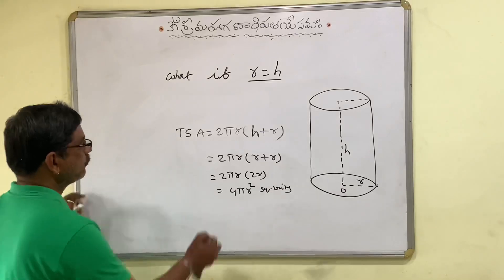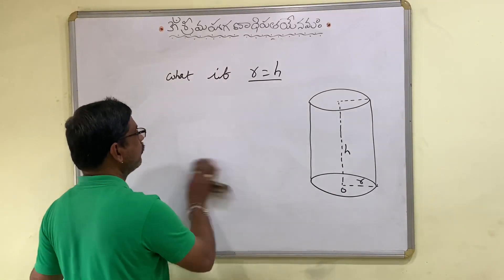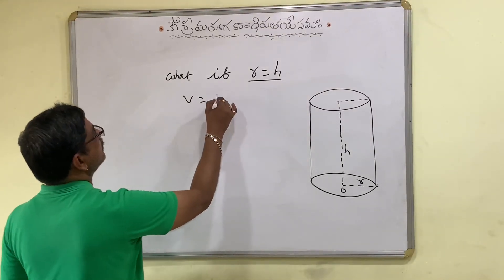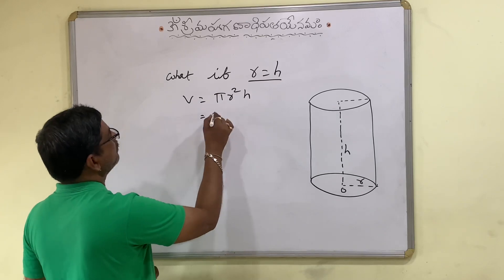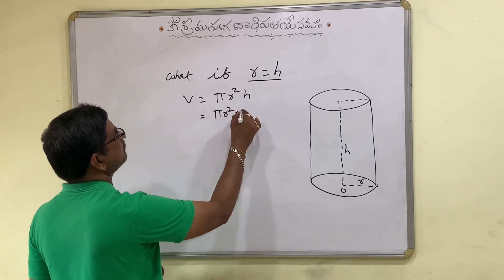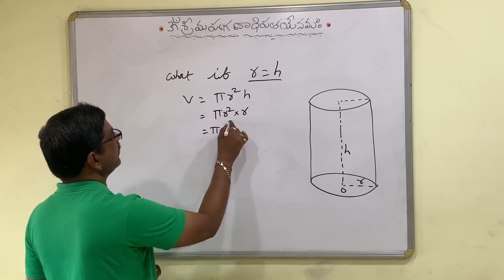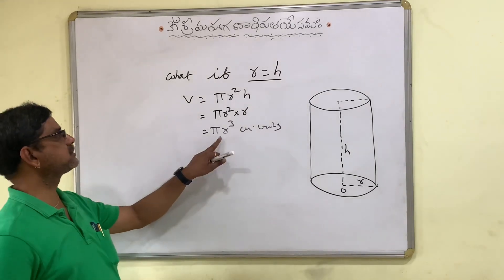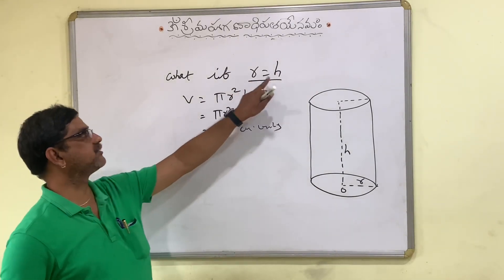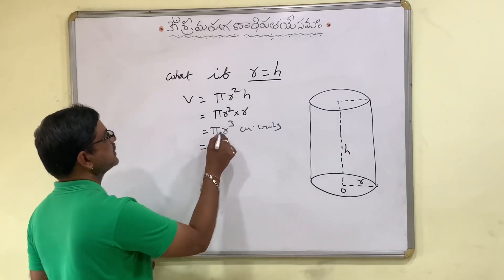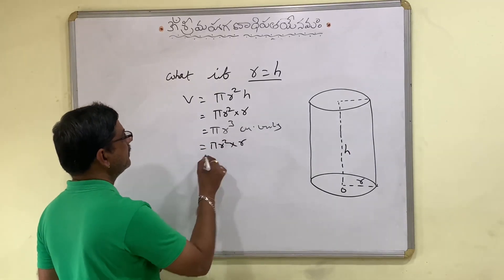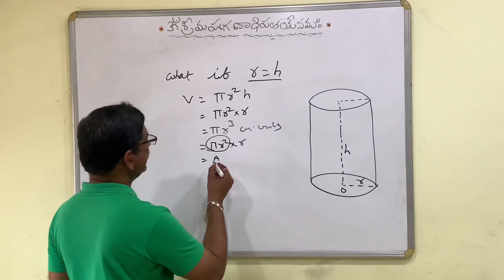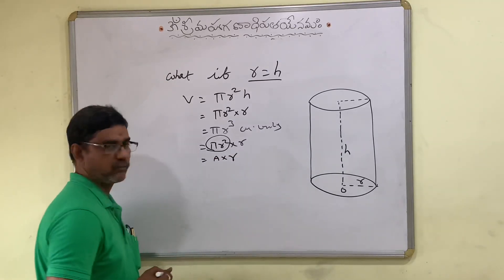Now let us see the volume. Volume of cylinder is πR square H. Inserting R in place of H, it becomes πR cube cubic units. So volume of cylinder becomes πR cube if R is equal to H. That means if we split this as πR square into R, we see that πR square is the area of the base (since the cylinder base is a circle), so it is area of the base into R.